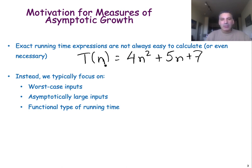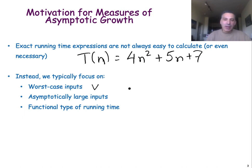So instead of trying to write such detailed expressions for the running time, we instead focus on three things. We focus on the worst-case possible input. Think about binary search: instead of assuming that you will be lucky and find what you are looking for with the very first comparison, we would assume that what you are looking for is not in the given array, and that would be the worst-case input for the binary search algorithm.